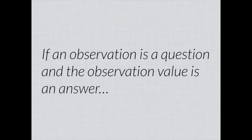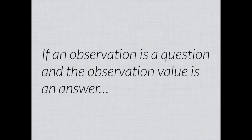Another way to conceptualize LOINC is to think of questions and answers. If an observation is a question and the observation value is the answer, LOINC's primary role is making codes that represent questions. Where needed, we typically leave it to other vocabularies or syntaxes to provide codes for the answers.